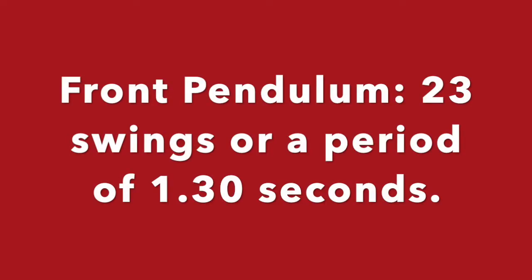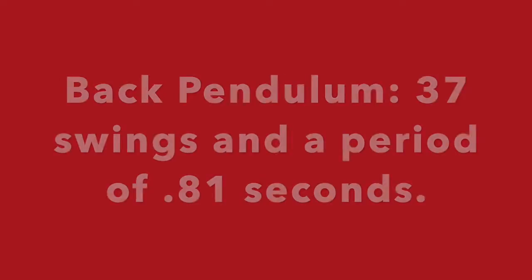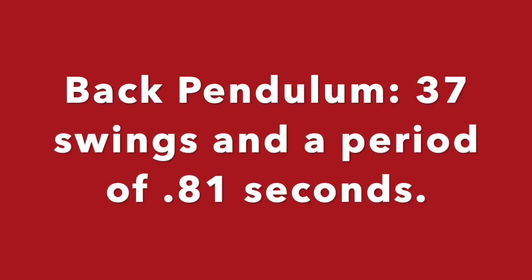The pendulum in the front had 23 swings or a period of 1.3 seconds. The pendulum in the back had 37 swings and a period of 0.81 seconds. It seems that the length of the pendulum does matter.